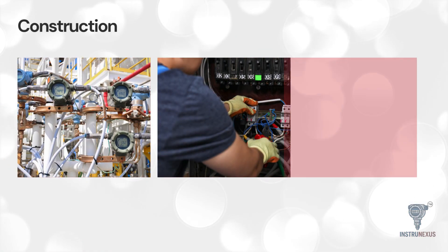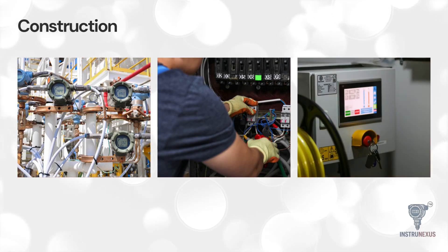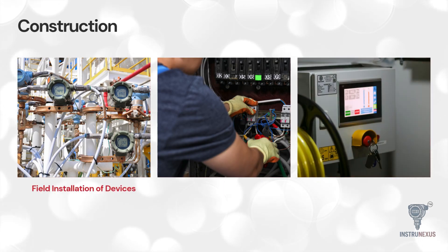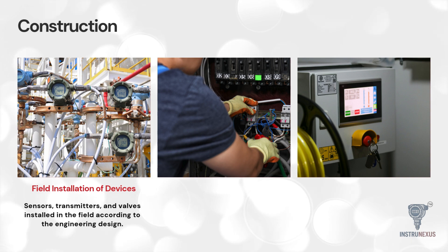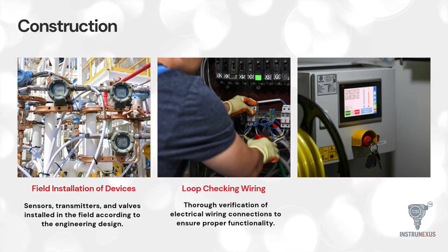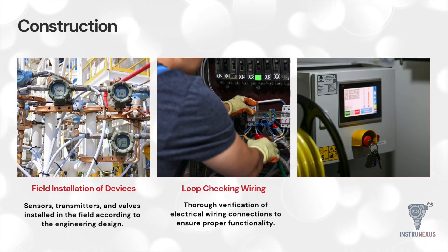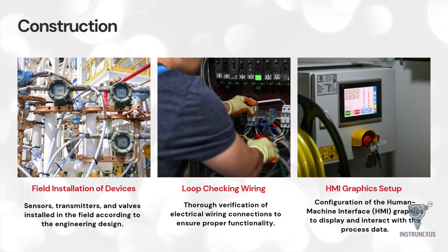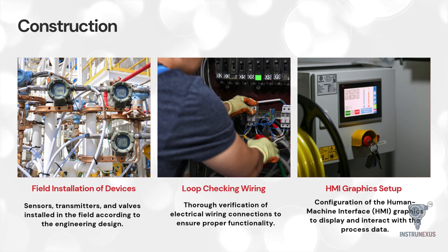While the code is being tested, the physical world is being built. This is the construction phase. Field installation of devices takes place, where sensors, transmitters and valves are mounted according to the design. A crucial step here is loop checking — electricians and technicians verify the wiring from the field device all the way to the control room to ensure continuity and proper polarity. Simultaneously, the HMI graphics setup is finalised. The human-machine interface is configured so that operators can visualise the process data and see the status of the interlocks defined in our matrix.